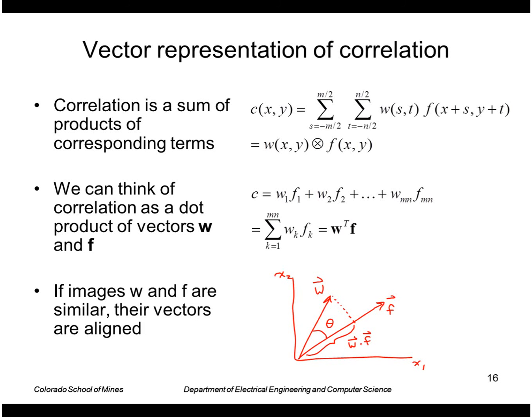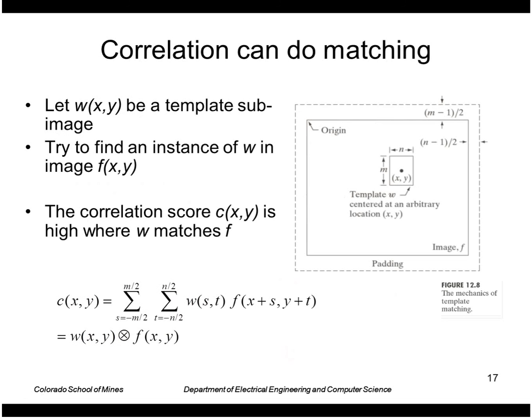Remember what dot products do. The dot product of two vectors is a maximum when those vectors are aligned. When this angle is zero then I get the full magnitude of that dot product. We can use this idea to do matching. We take a template sub image of something we want to look for in an image and we perform correlation with that in an image. The resulting scores are high where the template matches the image.